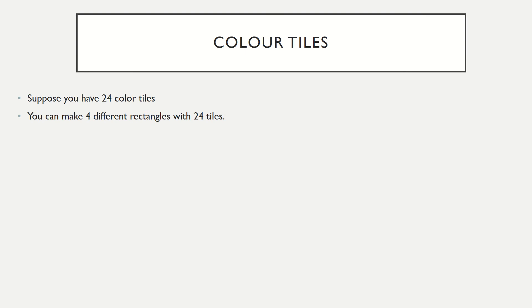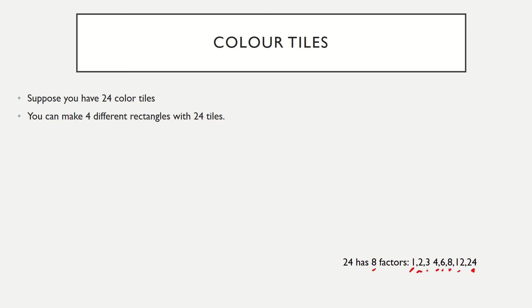One strategy you can use to show your work is color tiles. We can make four different rectangles with 24 tiles. The number 24 has eight factors: one times 24, two times 12, three times eight, and four times six.